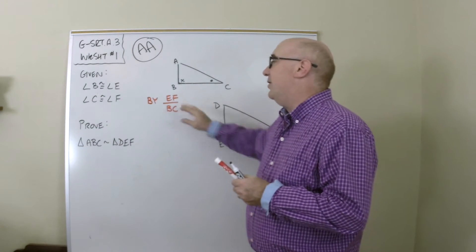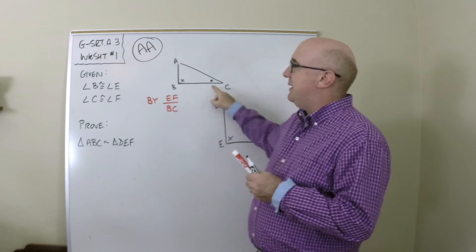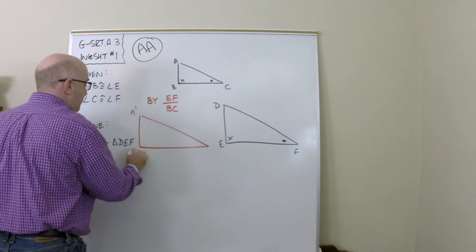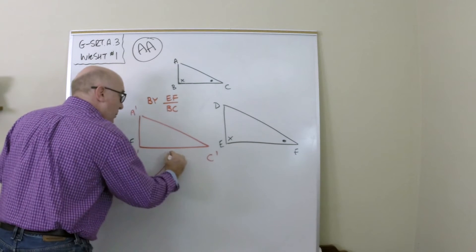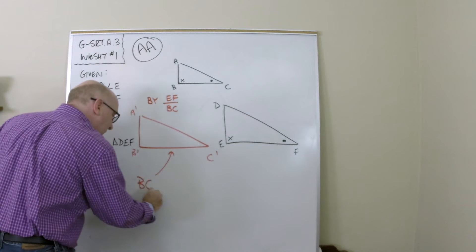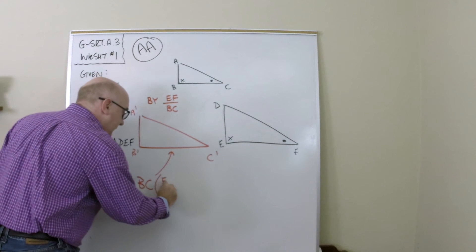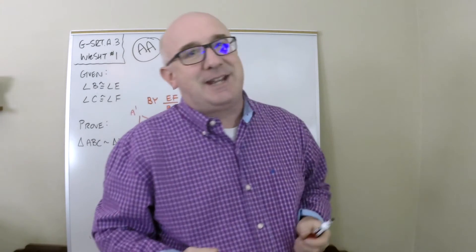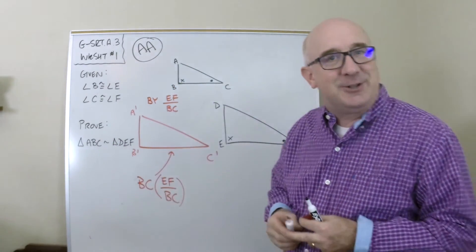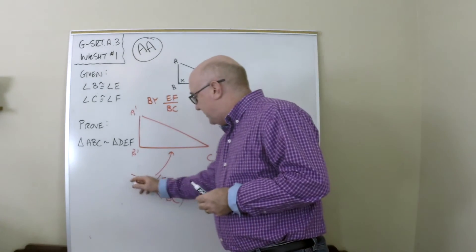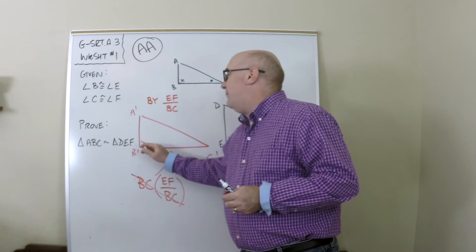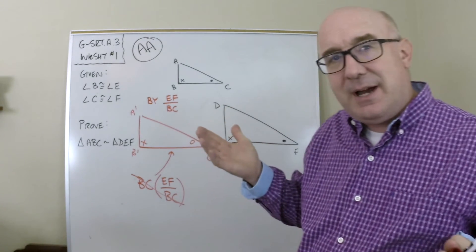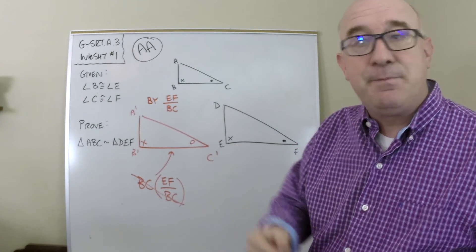If I dilate this shape by that scale factor, the new triangle has vertices A', B', and C'. How big would side C'B' be? It would be BC times EF over BC — the scale factor. That's a little sketchy-looking, but look what happens: we create a brand new triangle that has the same two angles, because dilations preserve angles.